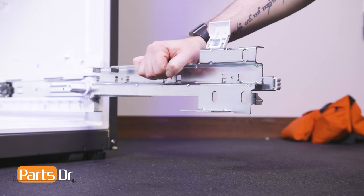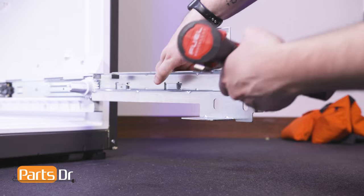Align the tabs on the slide bracket to the retainers on the rail, and set into place. Then reinstall the screws.